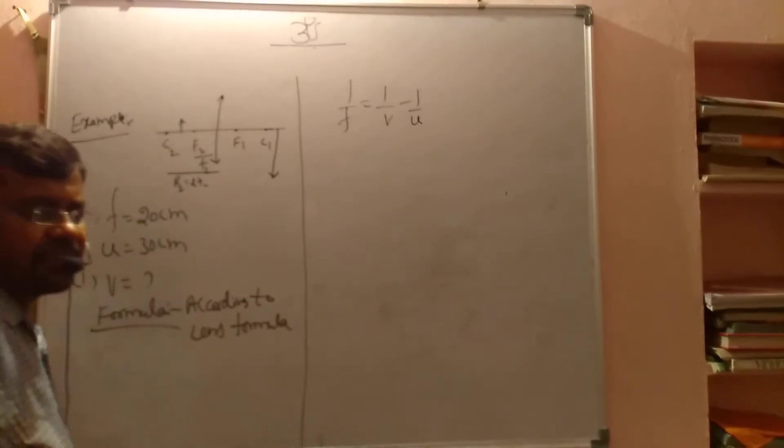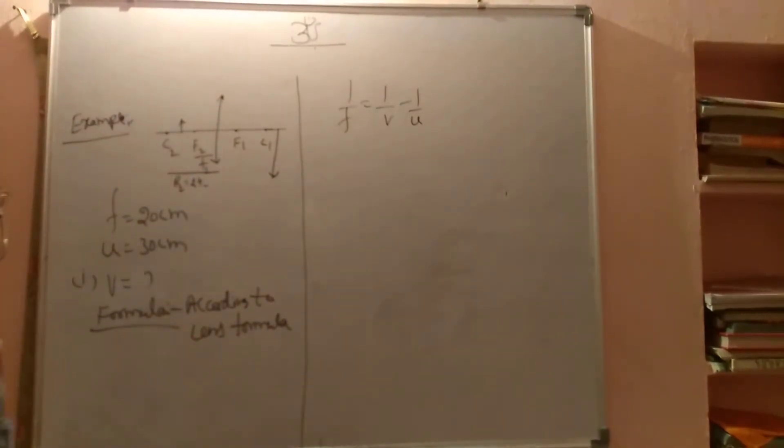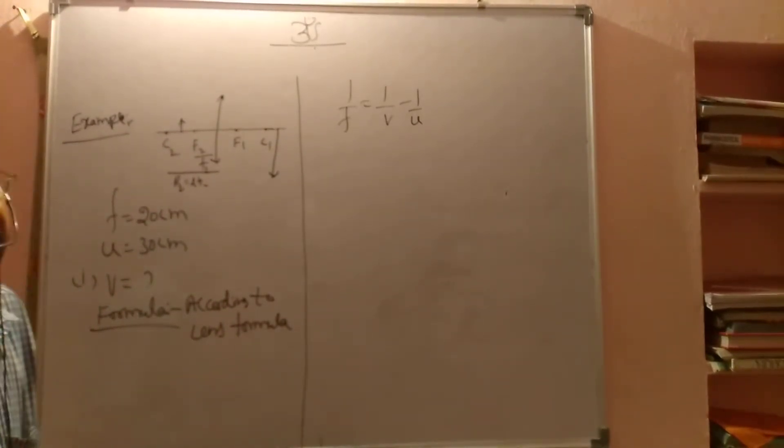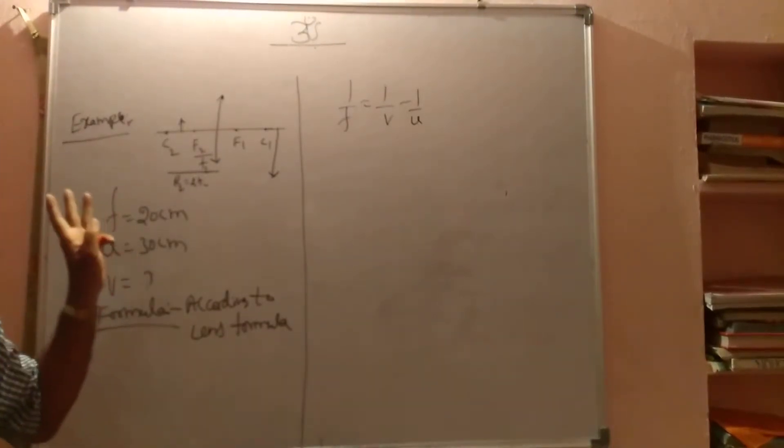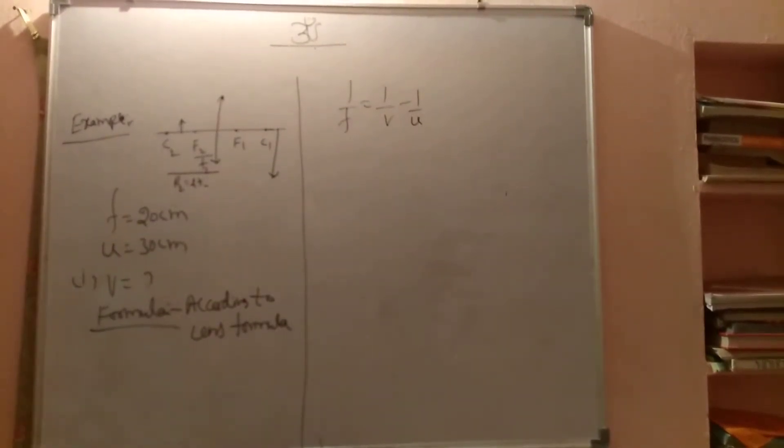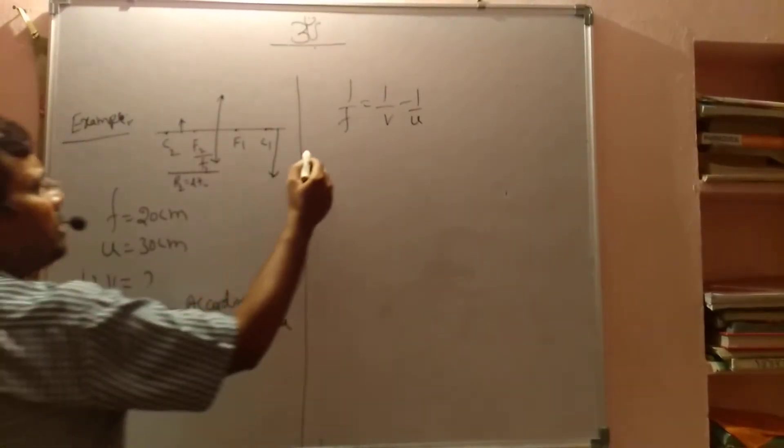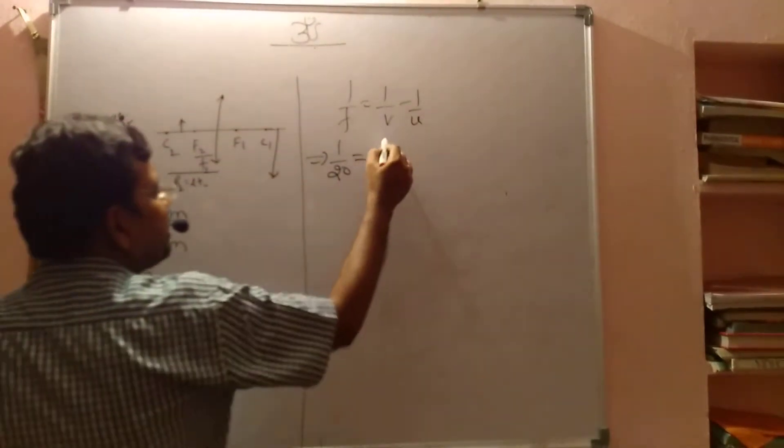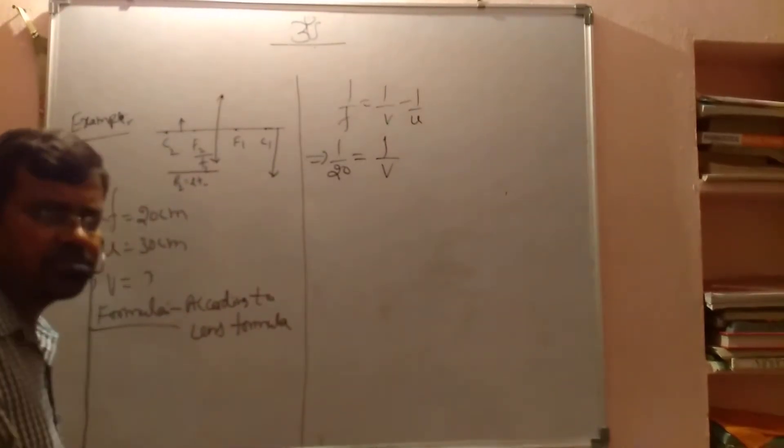In that again, you apply sign convention. Which things you are finding? No need to give sign convention to that. Which things are known, even then you apply sign convention. Focal length of a convex lens is always positive, so no need to apply sign convention. Now what is the value? So 1 by 20. That equals 1 by V—we are finding this, so for this you don't apply sign convention. That value only comes.